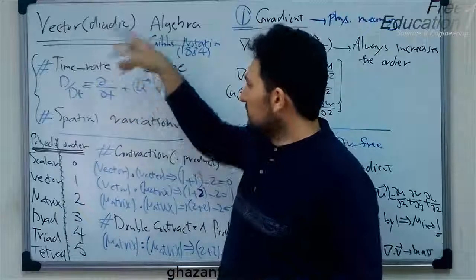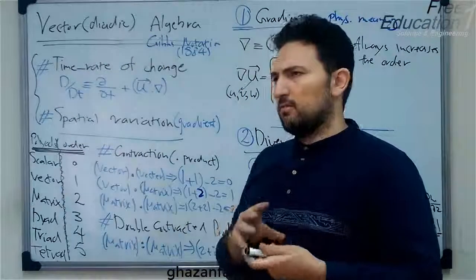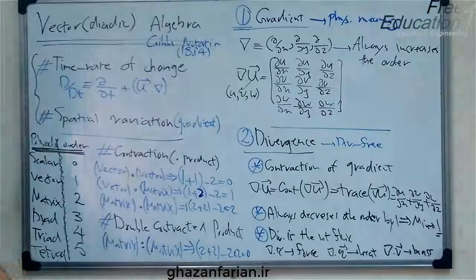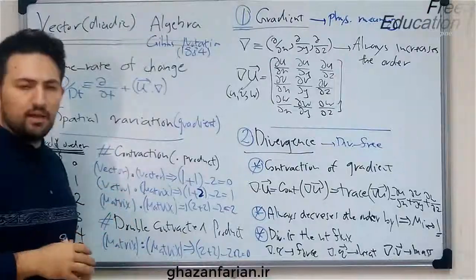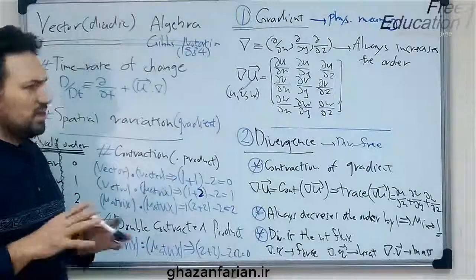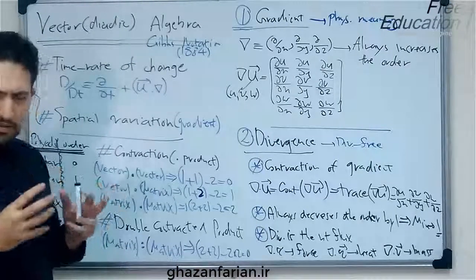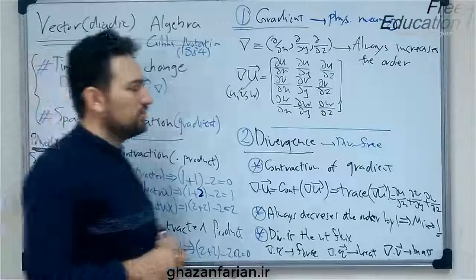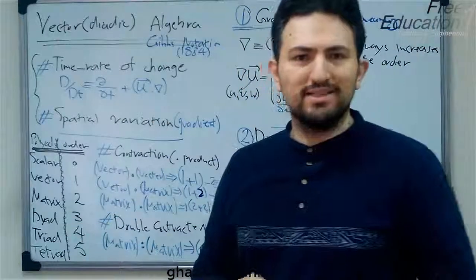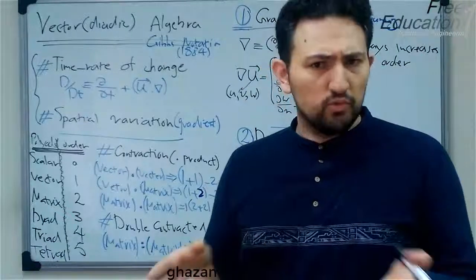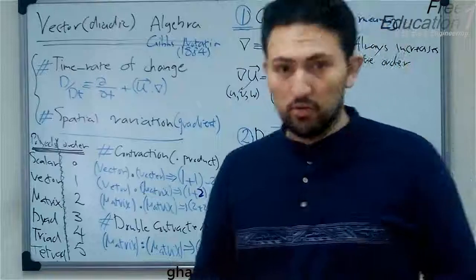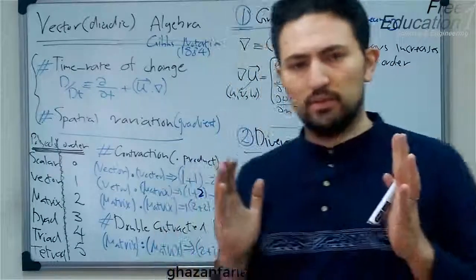Dyadic is the extension of vectors, which I will introduce in the next few minutes. The first one who introduced this algebra was Gibbs, around 1884. So this notation is known as the Gibbs notation. The other well-known notation is the tensor notation, which I don't want to speak about here — I will definitely record some other videos to introduce that important notation.